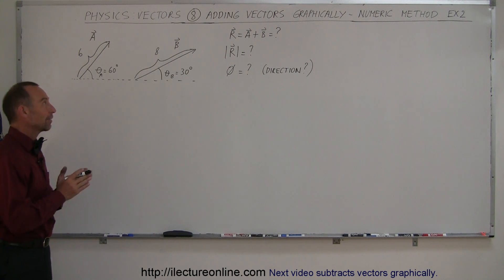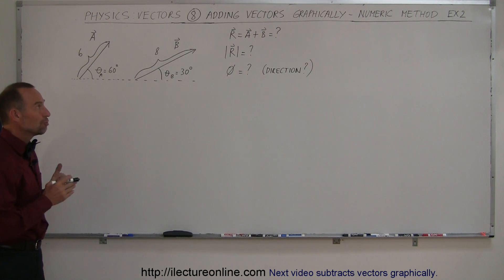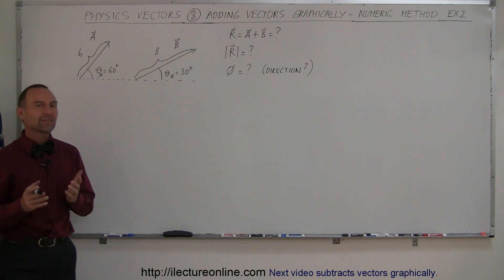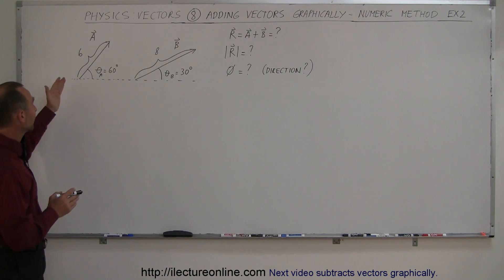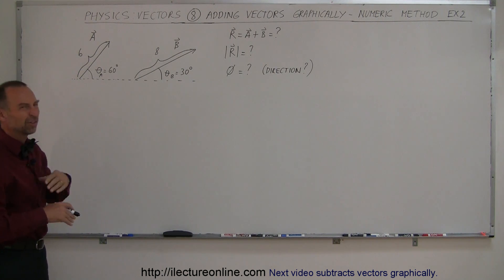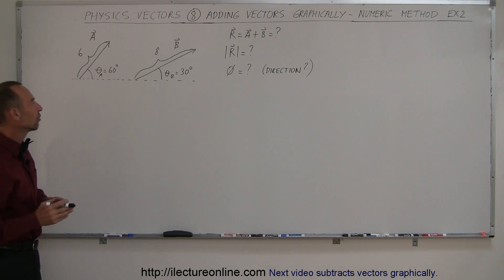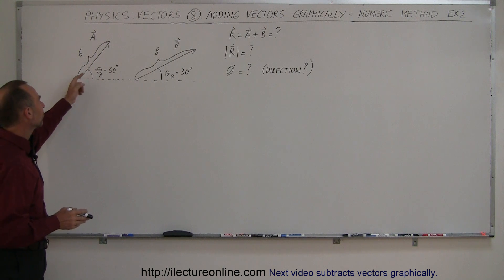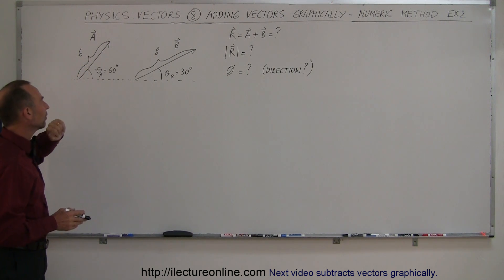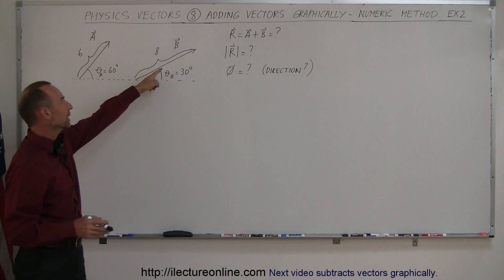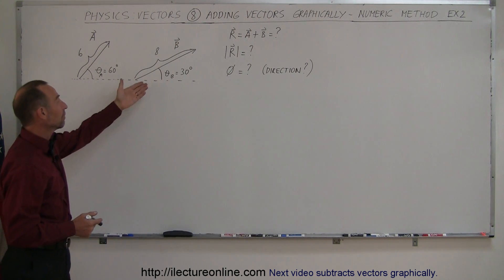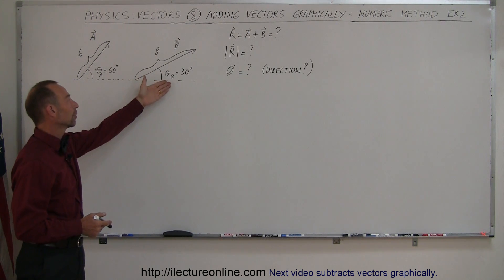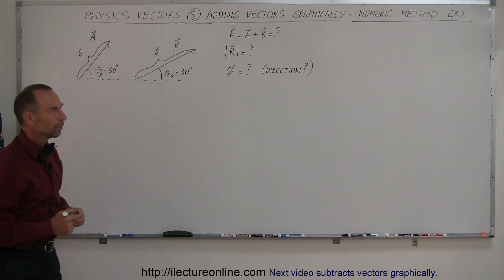To gain a better understanding of how to add vectors numerically, I have a second example for us here. We have vector A, which has a magnitude of 6 — no units — and it makes an angle of 60 degrees with the horizontal. Then we have vector B, which has a magnitude of 8, and it makes an angle of 30 degrees with respect to the horizontal.